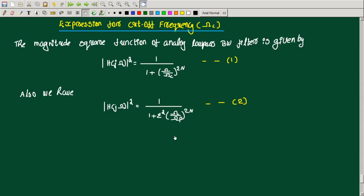Hello everyone, welcome to this new video. In the last lecture, I discussed the order of Butterworth filter — how to derive and obtain the order of the Butterworth filter, or the expression for the order of an analog lowpass Butterworth filter, denoted as N (capital N), and the Butterworth polynomial.